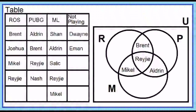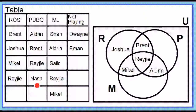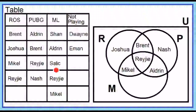Next, do we still have elements left in sets R, P, and M? Yes. Joshua is in set R — place Joshua in circle R. Nash is in set P — place Nash in circle P. Shan and Salic go in circle M. Next, place Twein and Iman outside the circles but inside the rectangle.